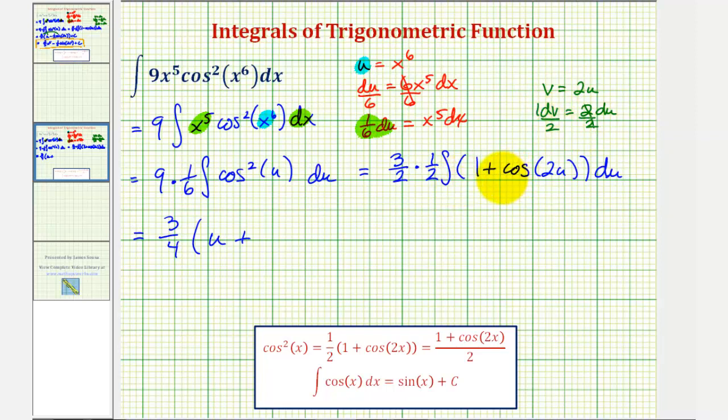Therefore, du equals one-half dv. So we'd have an extra factor of one-half when integrating. We'll have plus one-half times the integral of cosine v, which would be sine v, and we know v equals two u. So we have one-half sine two u, and then plus c.